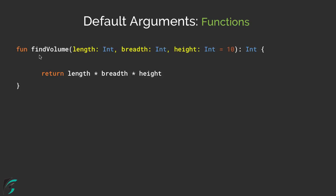Suppose I have a method named findVolume that takes the parameters of length, breadth, and height, and simply returns the integer value of the volume of an object. If you notice, the third parameter is height equal to 10. This is actually the default argument in Kotlin. So even if you don't pass the value of height, by default the height will have the value of 10.